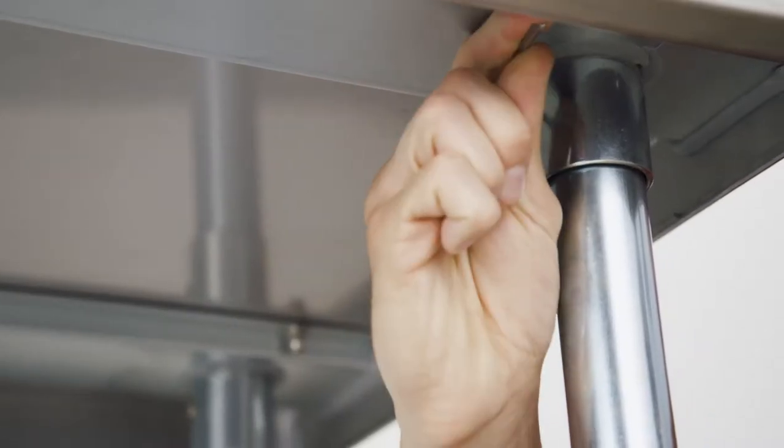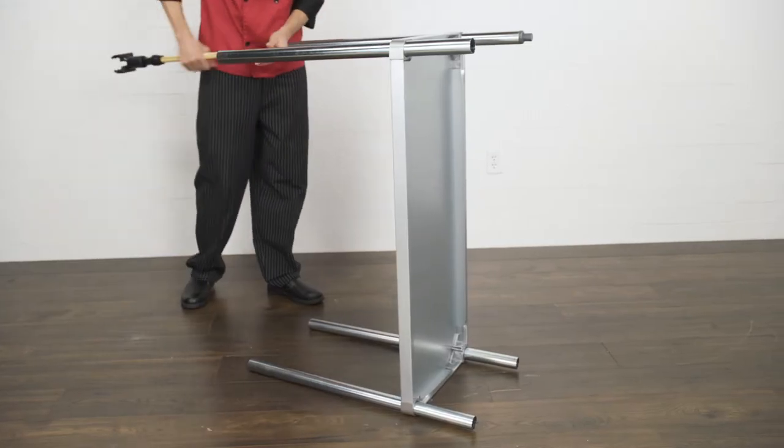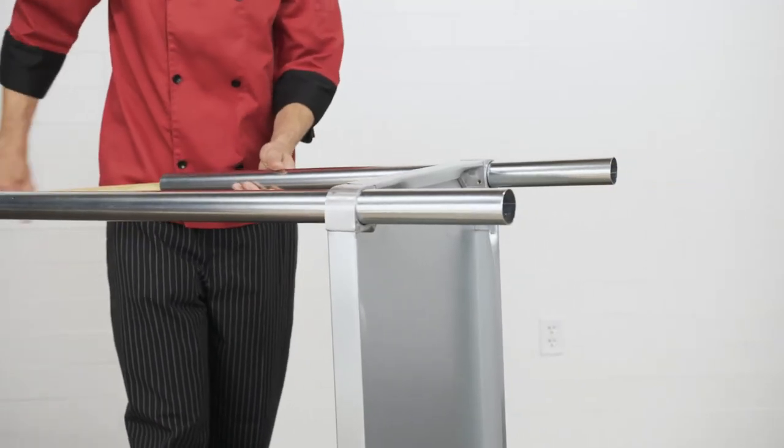Begin by using a wrench to remove the legs from the tabletop. Slide the broom handle into the open end of the leg and push it until the feet pop off.